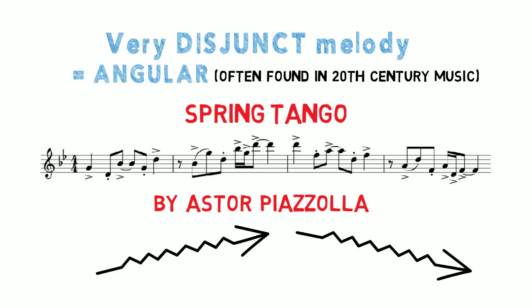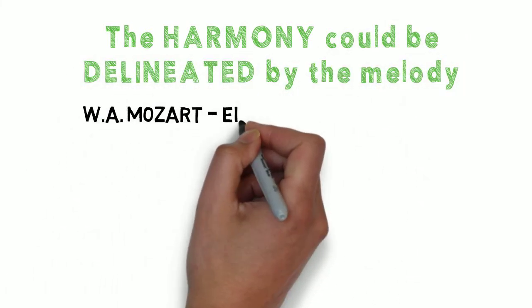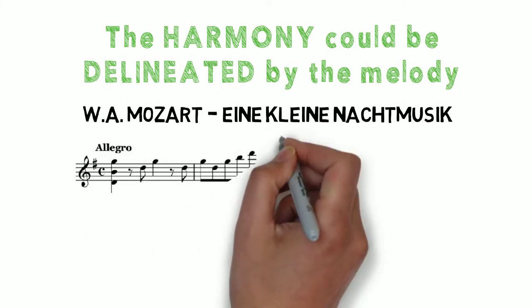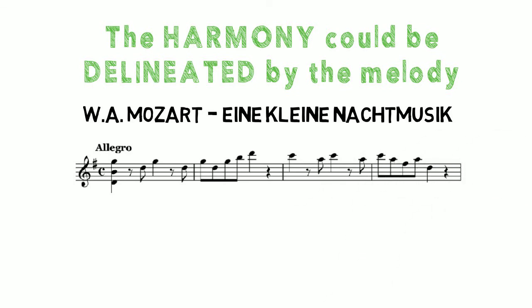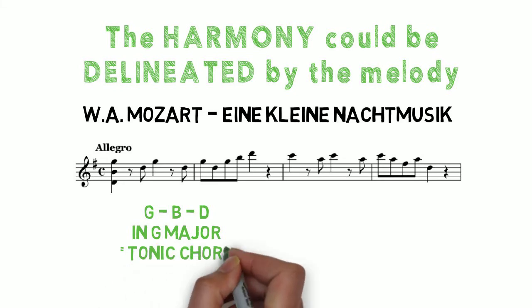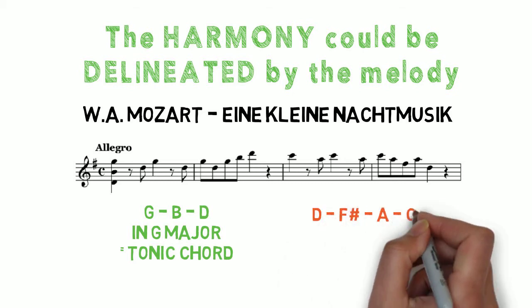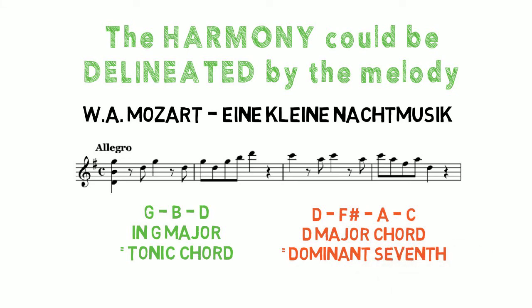A harmony could be delineated by the melody. For example, Mozart's Eine kleine Nachtmusik — the first two bars delineate, or outline, a G major triad: G, B, D. Since we are in the key of G major, that is a tonic chord. In bars 3 and 4, a D major chord is delineated, which is the dominant 7th chord in this example.